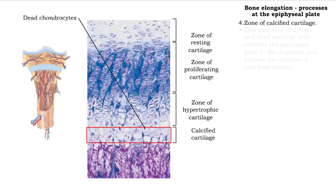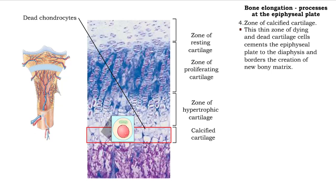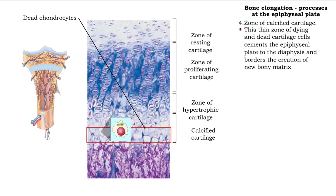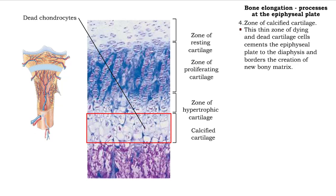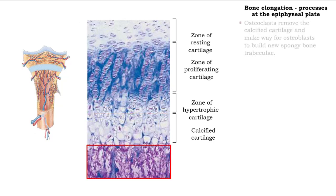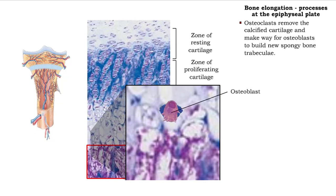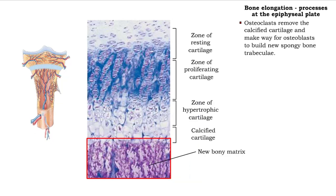The thin zone of calcified cartilage is only a few cells thick and consists of older and dying chondrocytes. The cartilage matrix near these cells has calcified. Osteoclasts break down the calcified cartilage, paving the way for osteoblasts from the diaphysis to deposit new bony matrix.